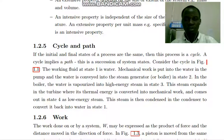For example, if the working fluid in state 1 is water, mechanical work is put into the water in the pump and the water is conveyed into the steam generator in state 2. In the boiler, the water is vaporized into high energy steam in state 3. This steam expands in the turbine where its thermal energy is converted into mechanical work and comes out in state 4 as low energy steam. This steam is then condensed in a condenser to convert it back into water in state 1.